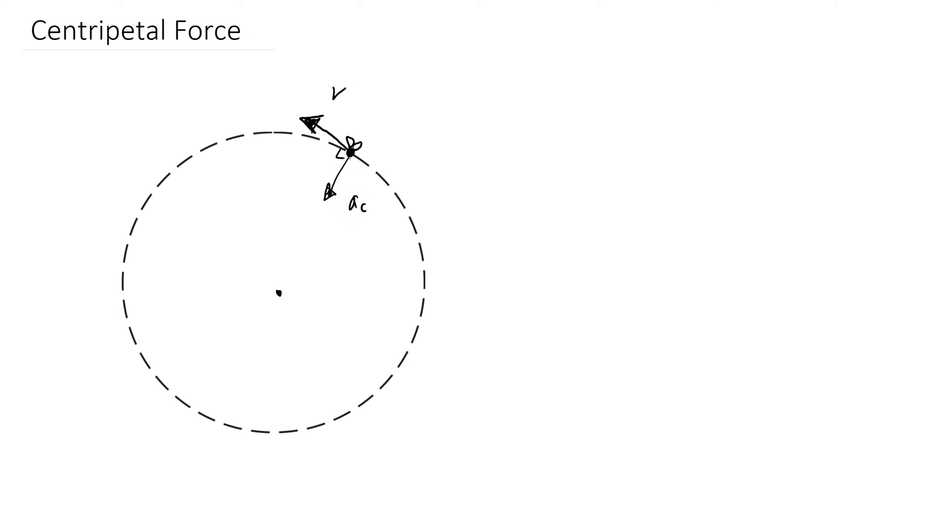These things are perpendicular to each other, and I can use this information to find out what the centripetal force is. It's going to be the mass times the centripetal acceleration, or I can write that as V squared over R. But sometimes it's hard to identify what the centripetal force is, so we need a couple of examples to help us wrap our minds around that.